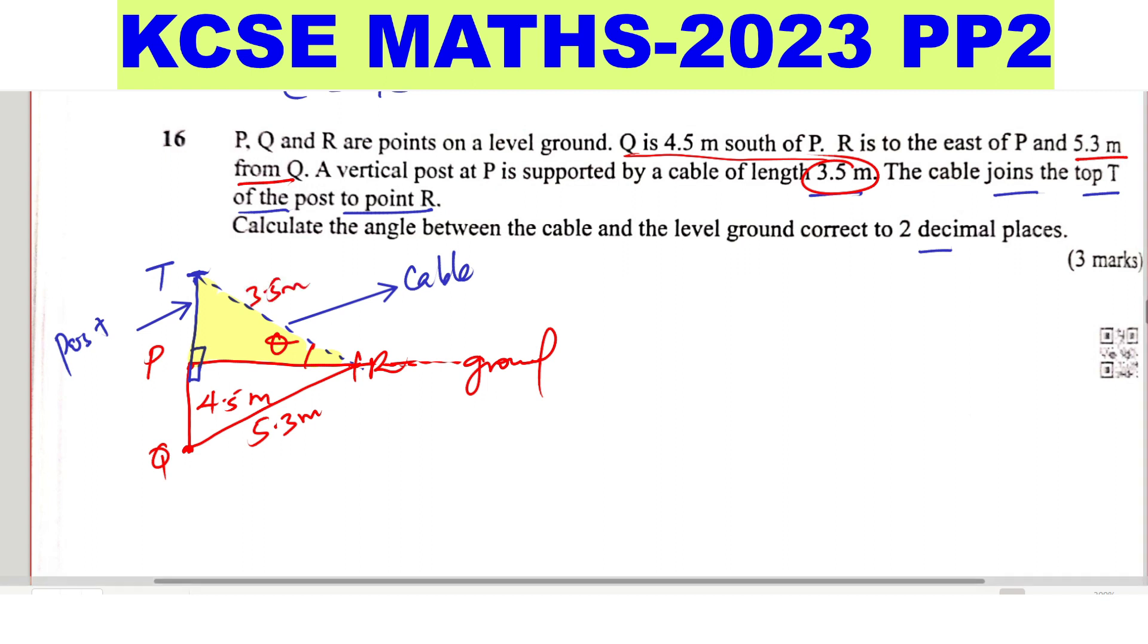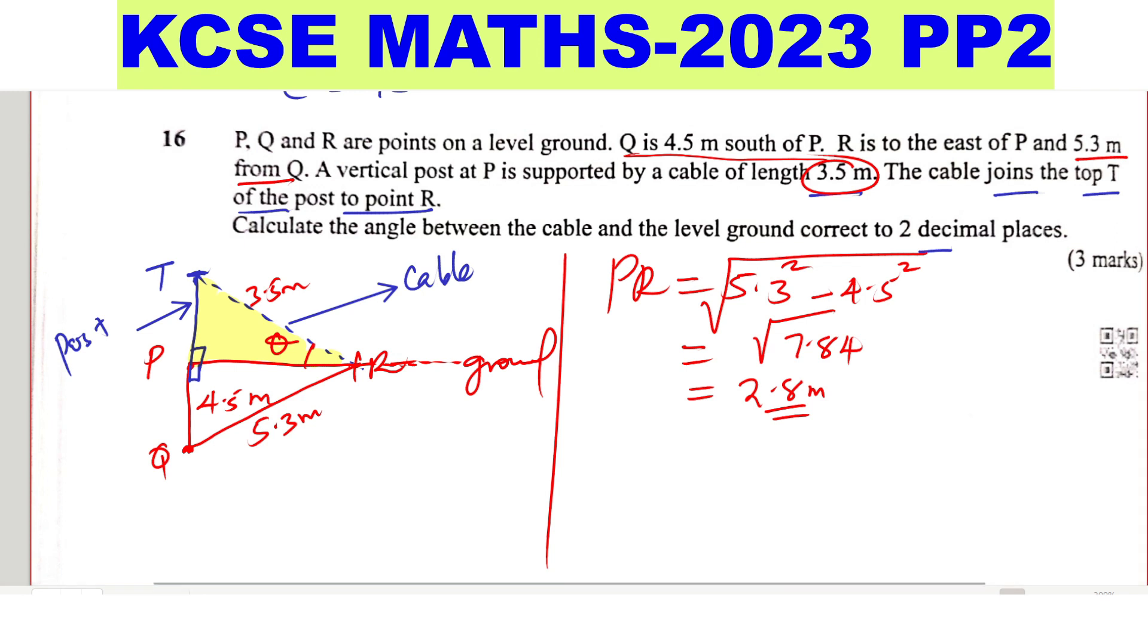So if you're able to get any other side it will be possible. So we can get PR using Pythagoras theorem, using this triangle PQR. So the hypotenuse, the hypotenuse is 5.3 squared, then minus that height 4.5 squared. So that will give us PR. So this will give the square root of 7.84. And when you get the square root of 7.84, that will give 2.8 meters. So PR is therefore 2.8.